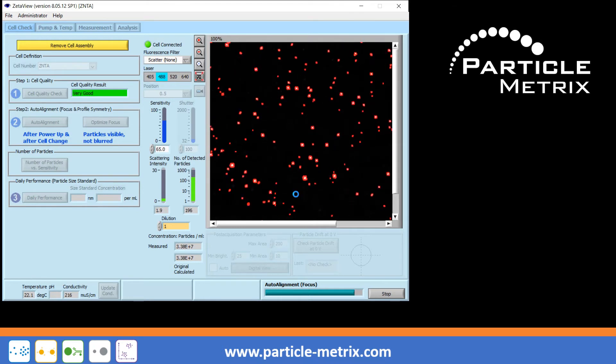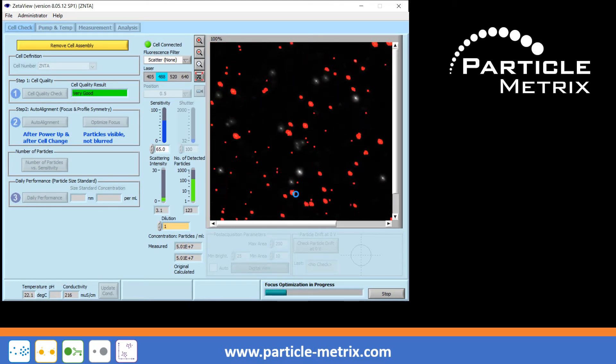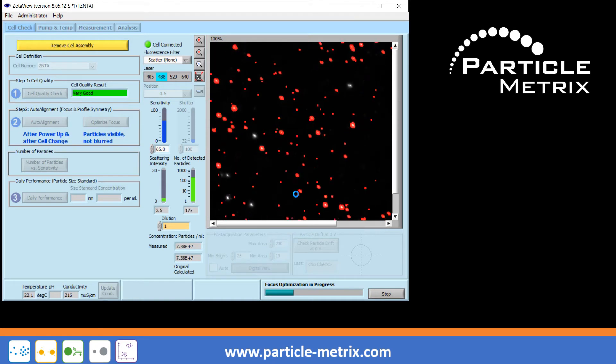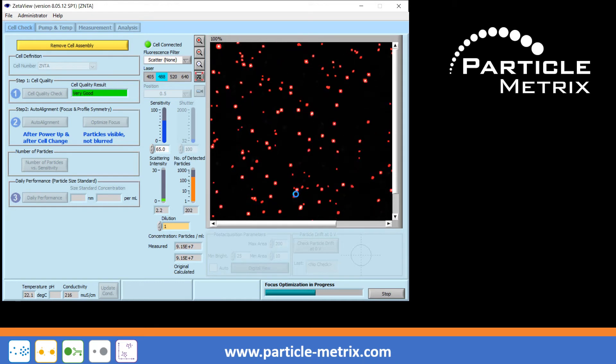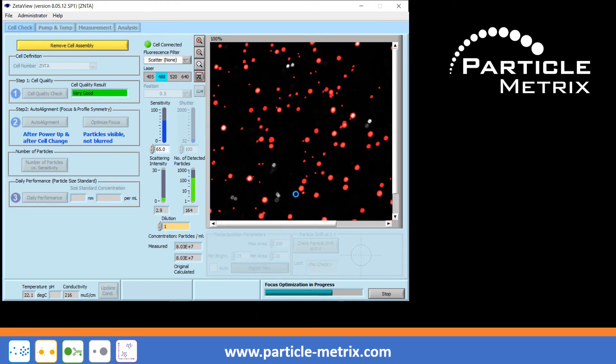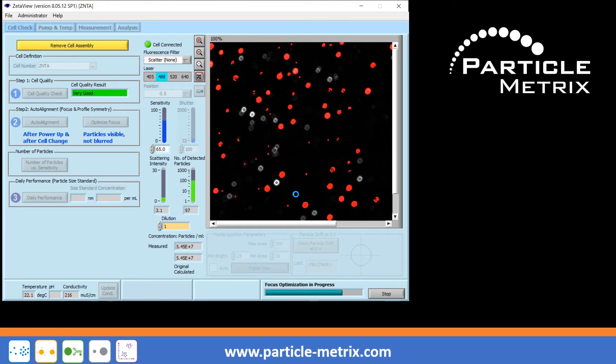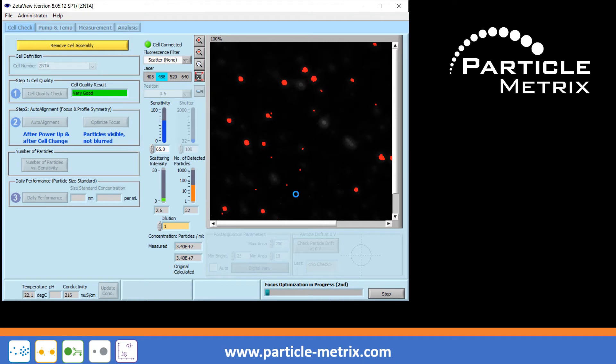The second step represents the focus optimization and takes place in fine increments around the focus point already found in the first step. Depending on the quality of the water in which the particles are suspended or on the age of the alignment suspension, this step can be carried out several times by the instrument.